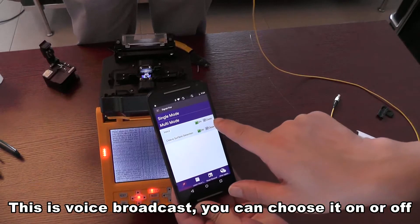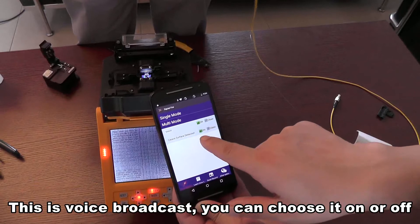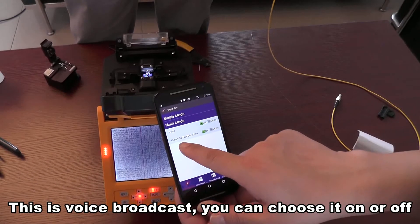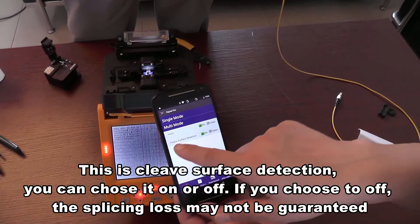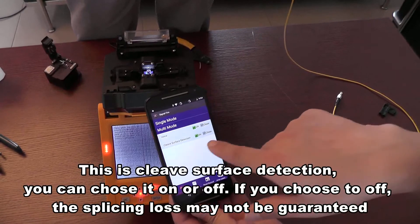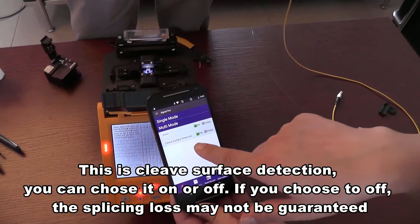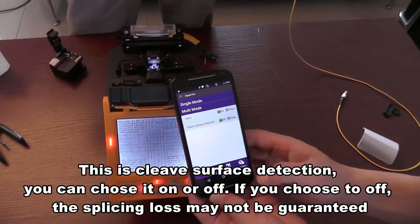This is voice broadcast, you can choose it on or off. This is cleave surface detection. You can choose it on or off. If you choose to off, the splicing loss may not be guaranteed.